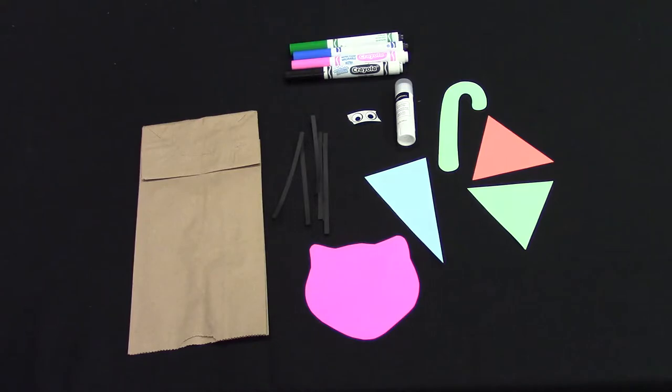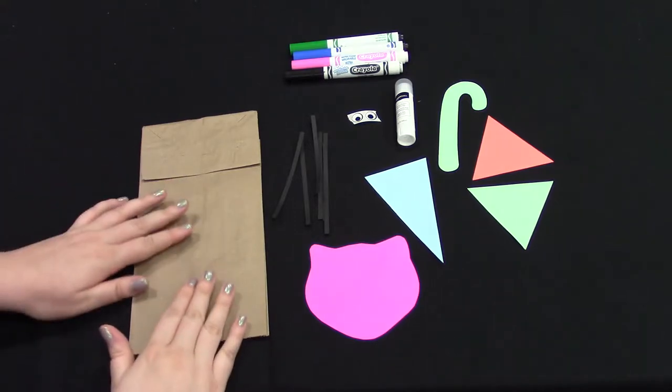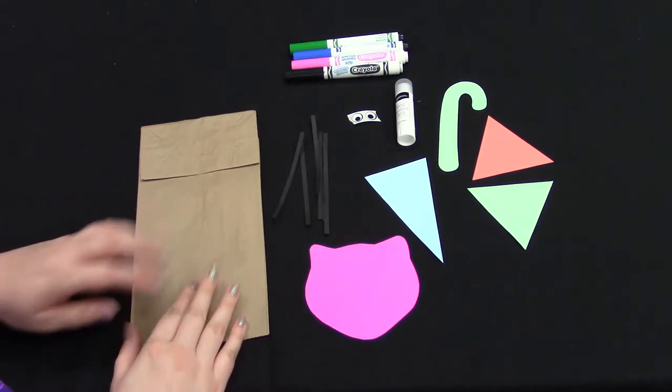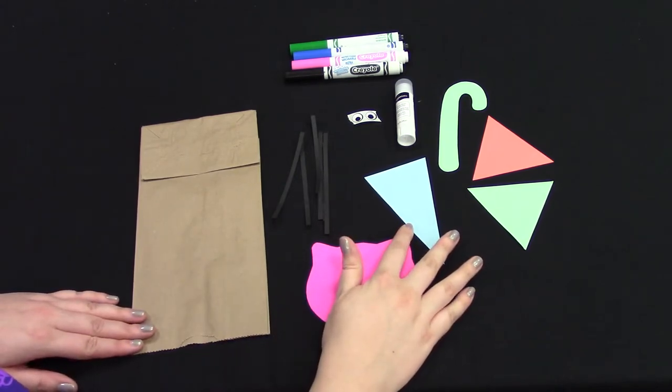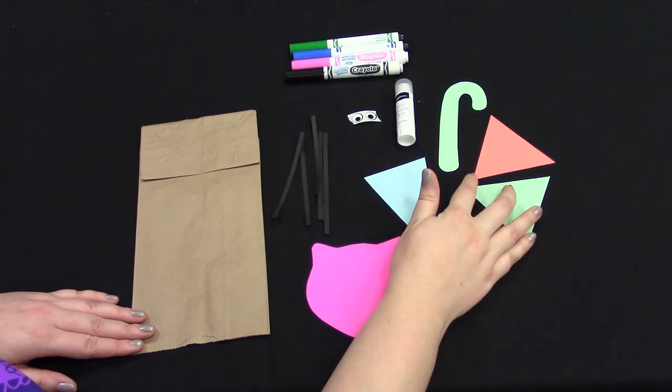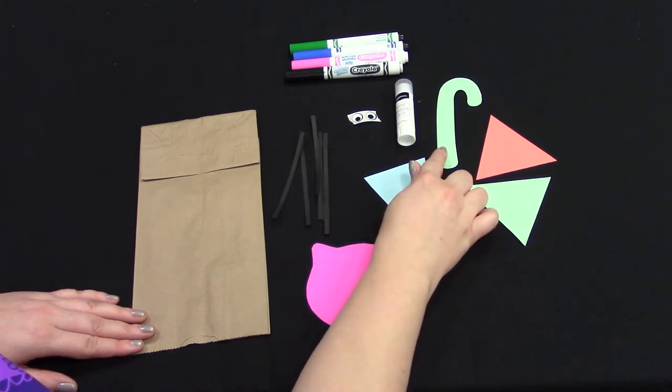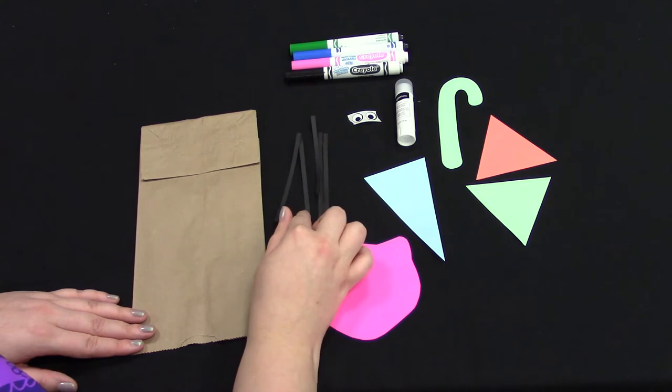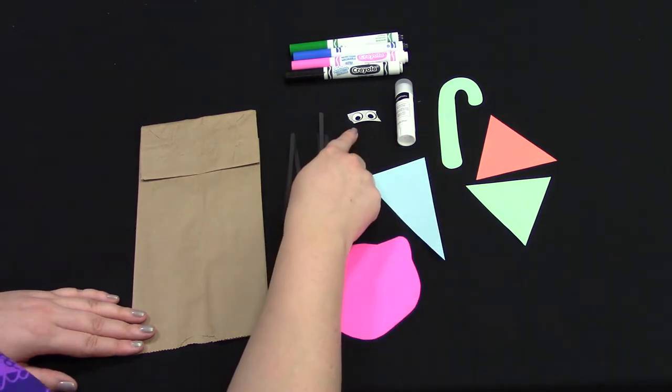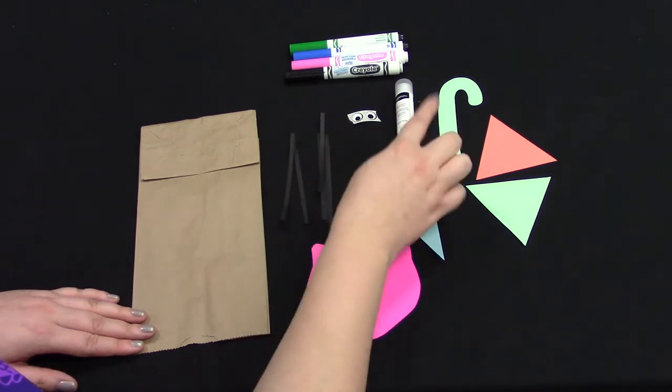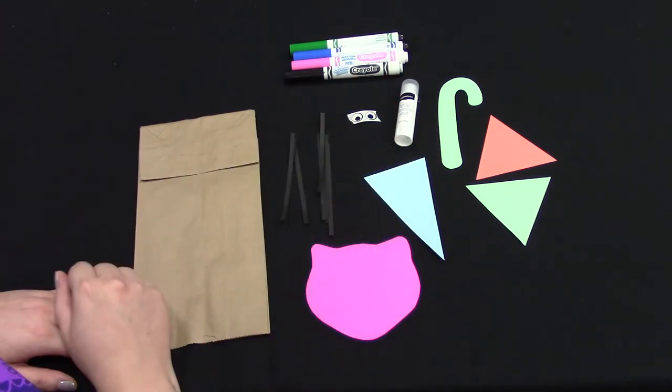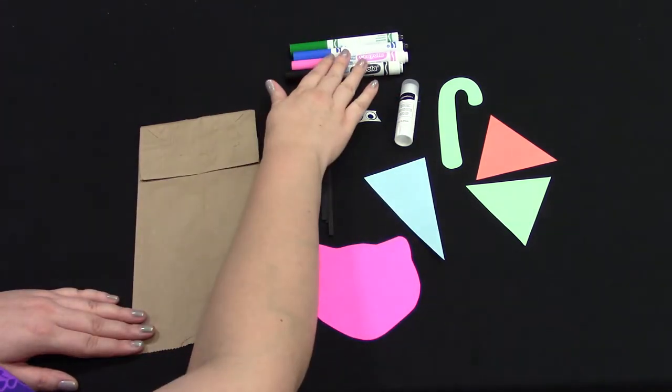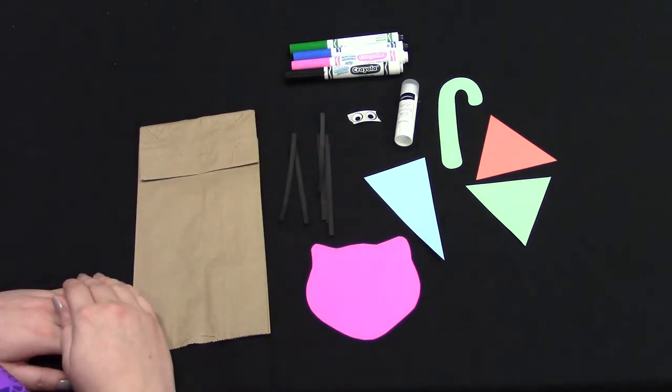Inside your bag you will need your actual paper bag, a tiger head, one skinny triangle, two short but fat triangles, one tiger tail, six tiger whiskers, one set of stick-on eyes, and a whole glue stick. In addition to these items you will need some markers or crayons or something to draw with.